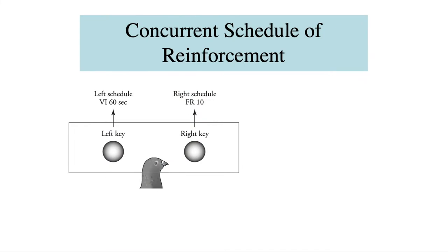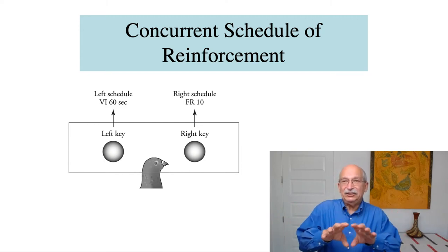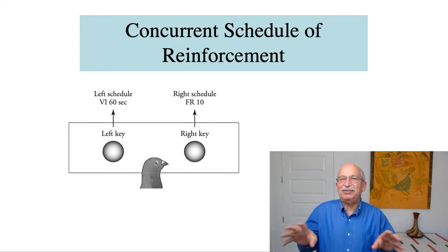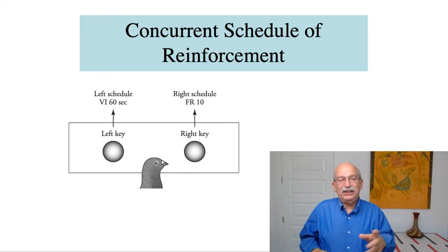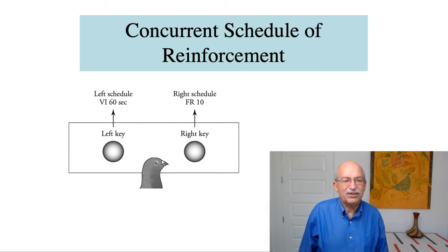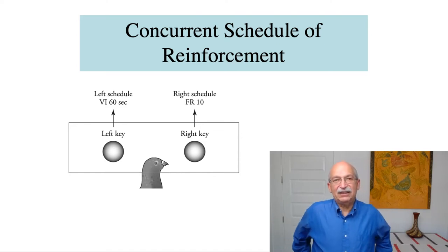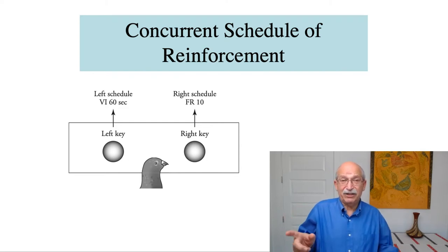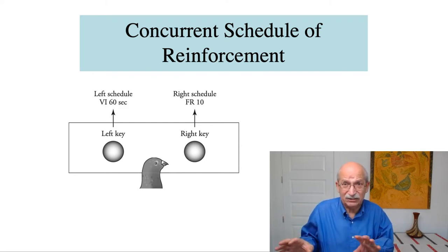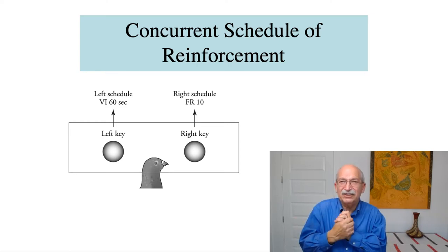This is a diagram of the concurrent schedule of reinforcement, in which there are two simple schedules available at the same time — hence the term concurrent. In this particular example, the pigeon can peck the left key and be reinforced on a variable interval 60-second schedule, or peck the right key and be reinforced on a fixed ratio 10. A critical feature of this concurrent schedule is that the pigeon is free to move back and forth between the alternatives — that's a defining feature of concurrent schedules.